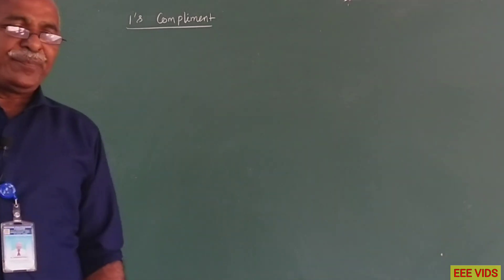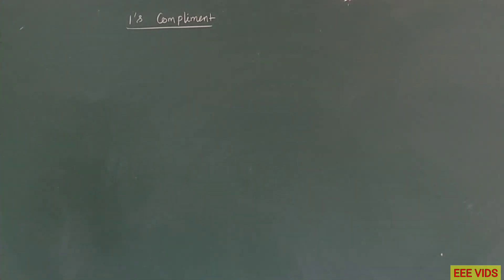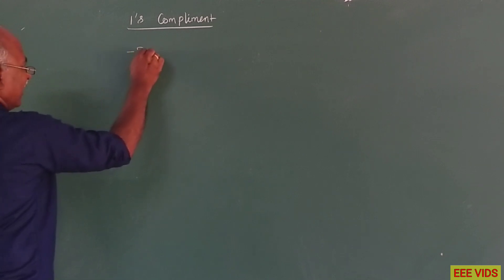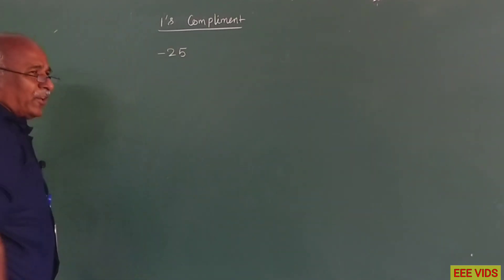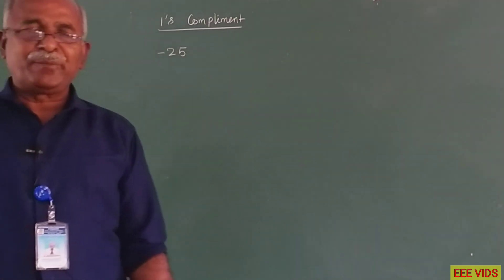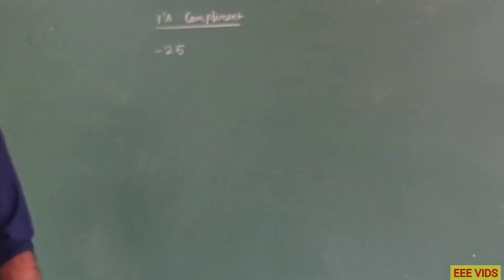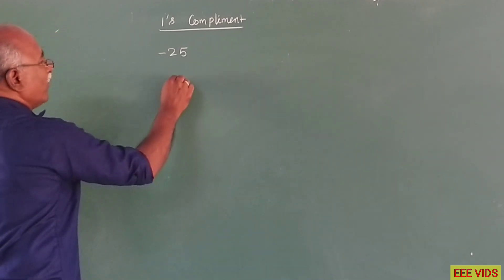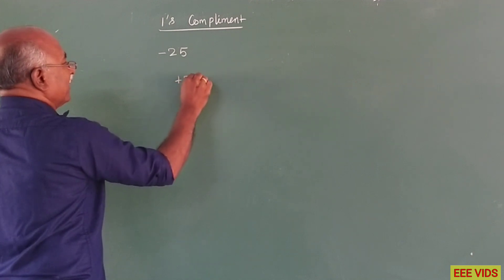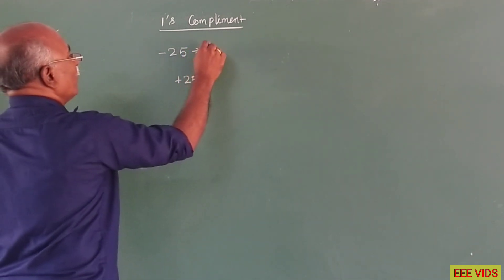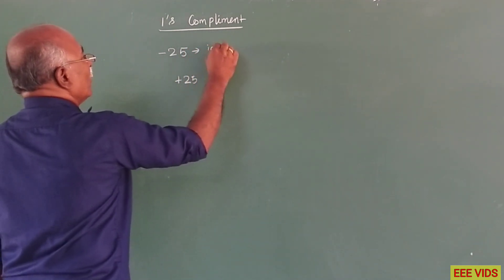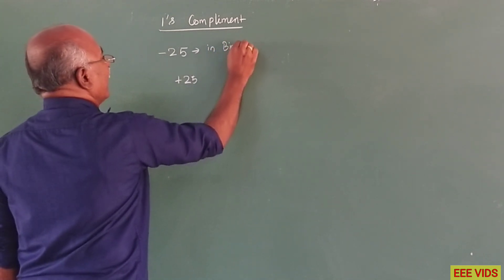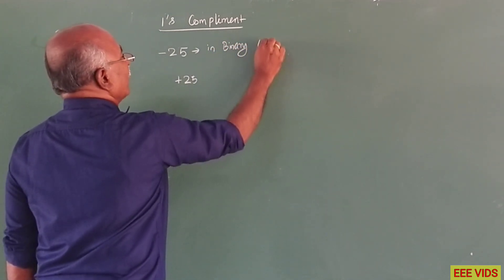So, what do we need to do? Here we need to write the number. For example, we need to represent the number minus 25 in binary using 1's complement. What do we need to do? First, we need to represent plus 25. So, represent minus 25 in binary using 1's complement.